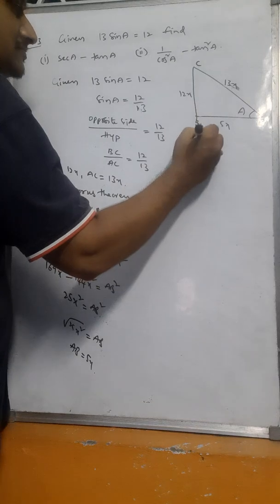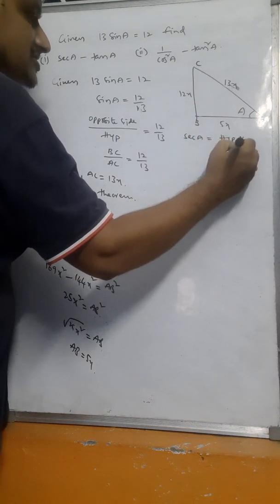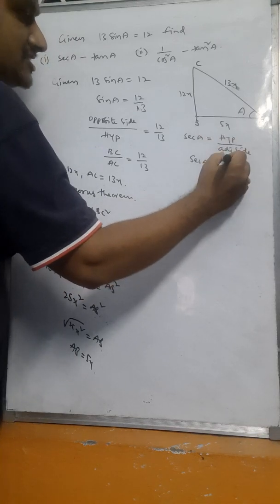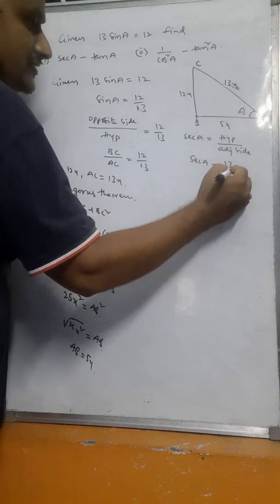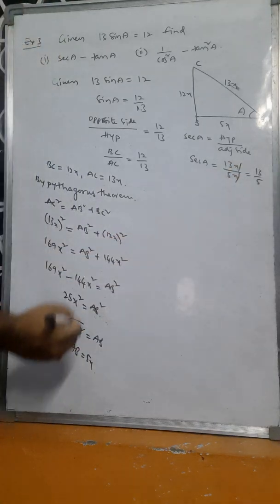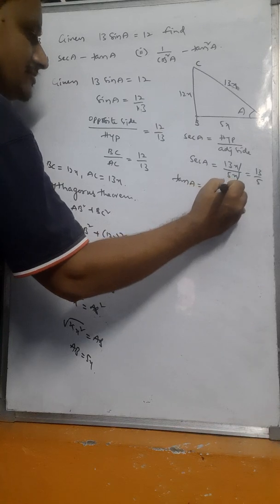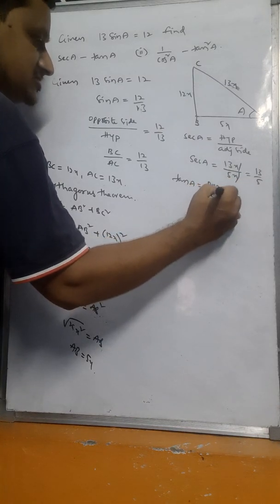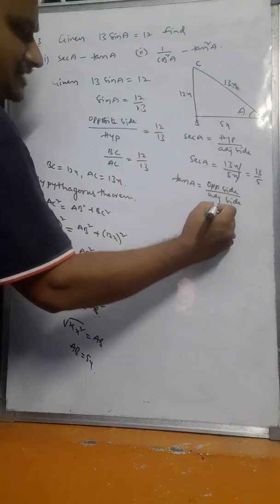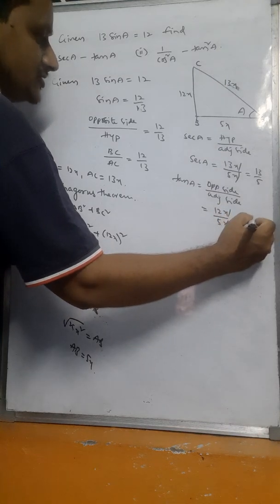Now finding sec A: sec A equals hypotenuse by adjacent side, which is 13x by 5x, giving 13 by 5. Tan A means opposite side by adjacent side, which is BC by AB equals 12x by 5x, giving 12 by 5.